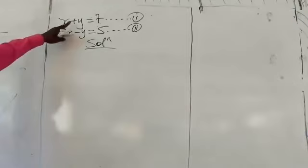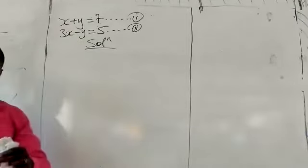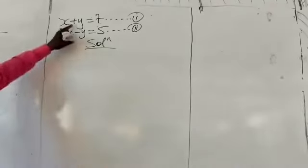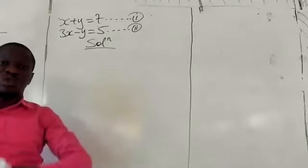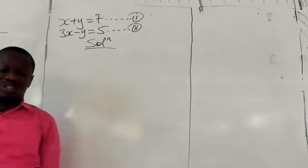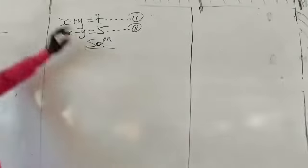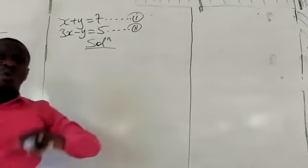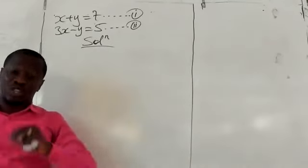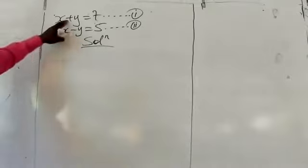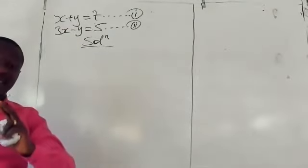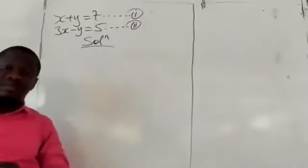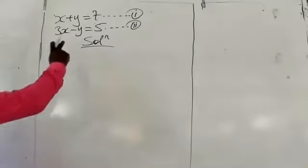Whenever we have a positive and a negative term for the same variable, then we add equation 1 and equation 2 together. So adding equation 1 and equation 2: we take equation 1, which is x plus y equals 7, and then we take equation 2, which is 3x minus y equals 5. Everything must equal 7 plus 5.